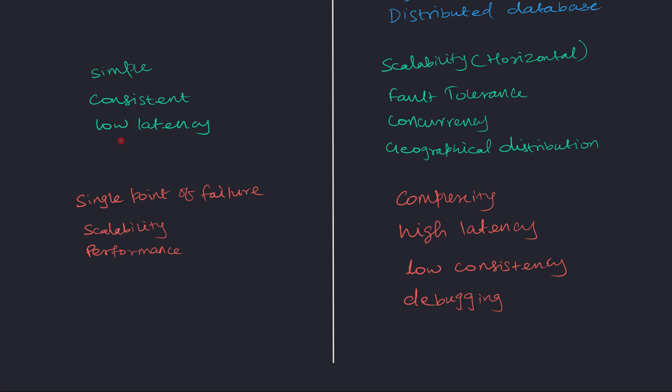In terms of the advantages of centralized system, usually centralized systems are simple to design and develop and they are always consistent because it is just one node. There is no inconsistency problem and also they are usually low latency systems because there is no communication overhead between the nodes.